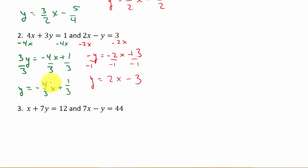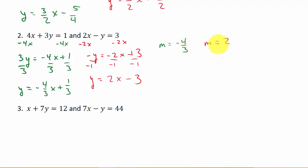The slope of the first line is negative 4 thirds, and the slope of the second line is 2. The slopes are not the same, so they're not parallel. And they're not negative reciprocals of each other, so they're not perpendicular. So these lines are neither.